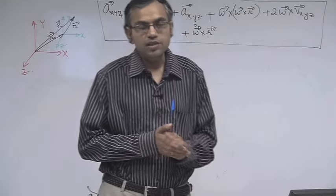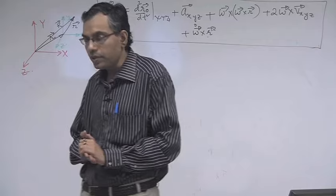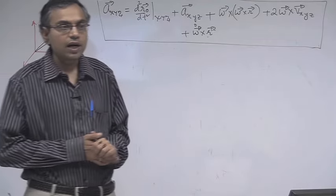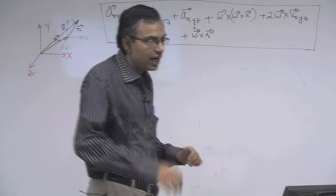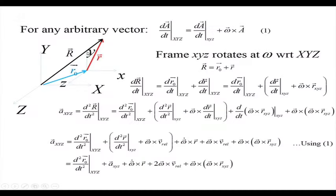In the previous lecture, we started discussing the basic mechanics of flow on a rotating device, beginning by considering the derivative of a vector in a moving reference frame. To summarize: we considered a capital XYZ inertial reference frame and a small xyz frame rotating at angular velocity omega. We derived the final expression that acceleration with respect to small xyz equals d²r₀/dt² with respect to capital XYZ, plus acceleration with respect to small xyz, plus omega-dot cross r, plus 2 omega cross v_relative, plus omega cross (omega cross r).